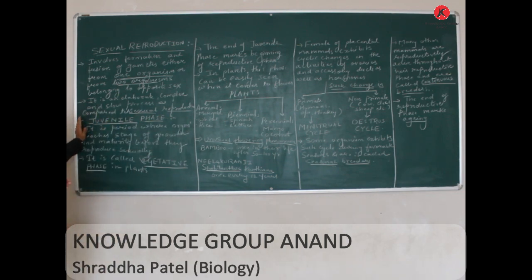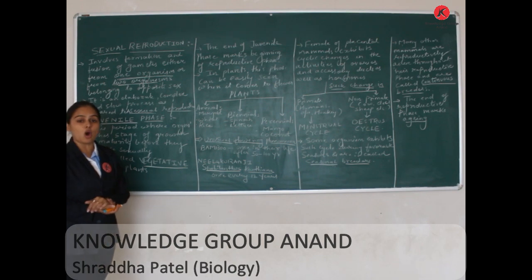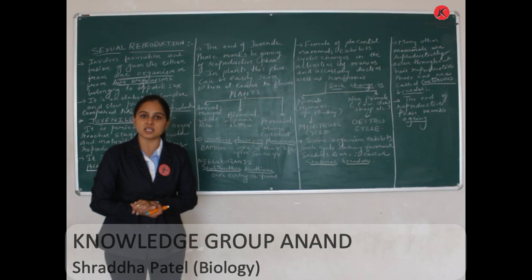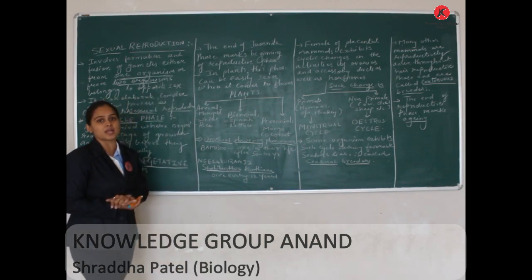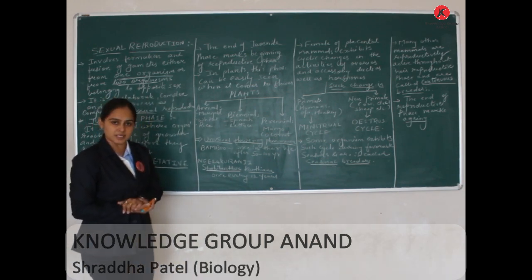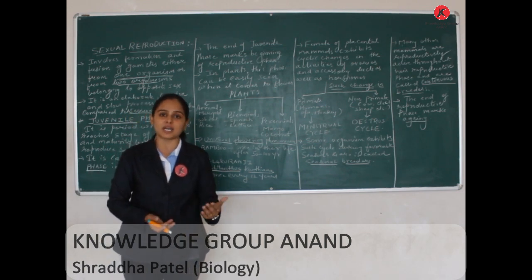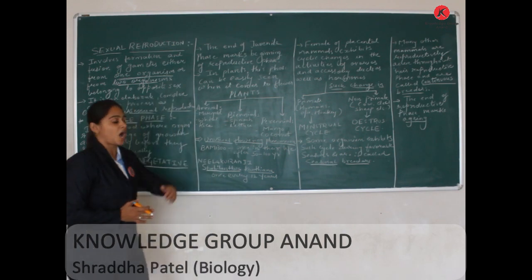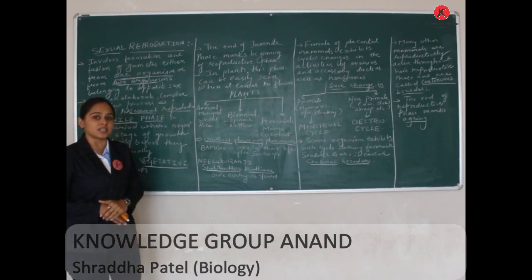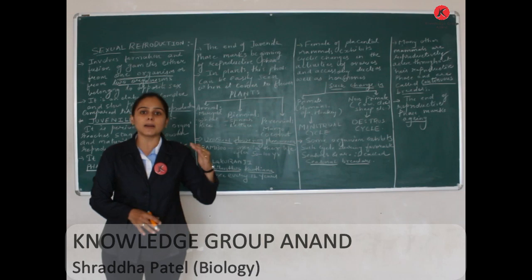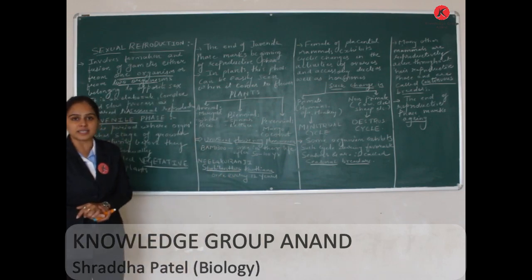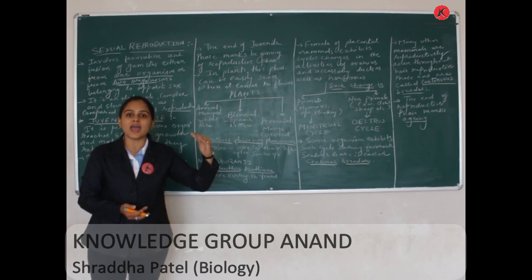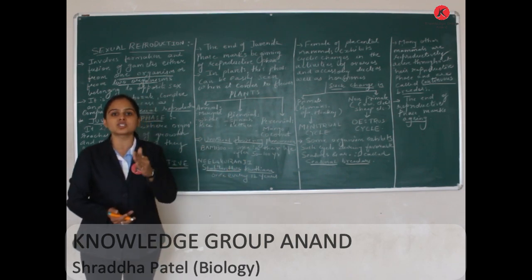Now talking about diversity in nature, we are all surrounded by diverse organisms like plants, different animals, fungi, and many more organisms. These organisms differ in morphological structure, anatomically as well as physiologically. But when it comes to sexual reproduction, they exhibit a similar pattern — all organisms have to reach a certain stage of growth and maturity before they reproduce sexually.